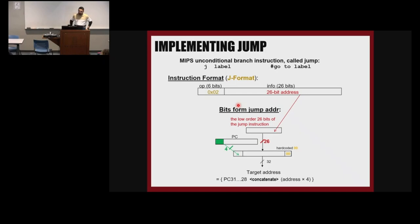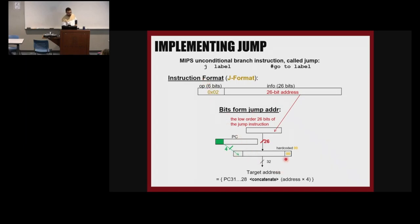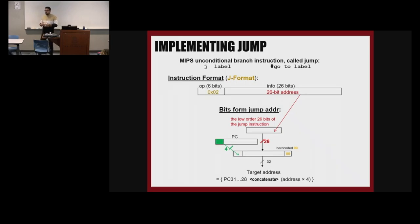Jump is the last thing we cover. We have 26 bits — the opcode has 6 bits and then 26 bits for the address. We get this 26-bit field, shift it left twice (multiply by 4), and concatenate this 28-bit result with the 4 most significant bits of PC plus 4 to get a 32-bit jump address. We talked about this before — we know how it works.